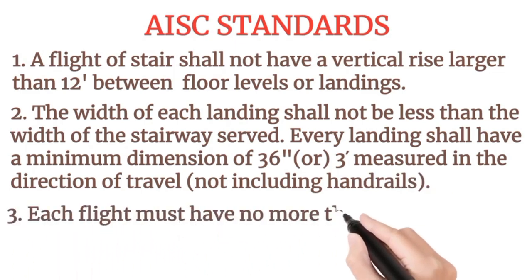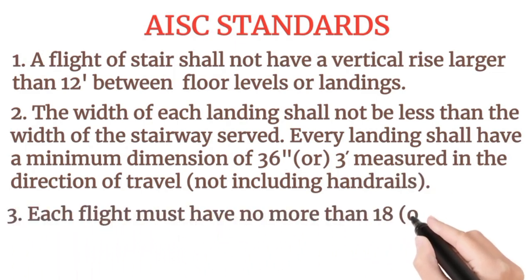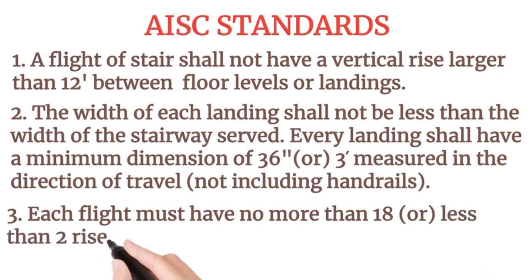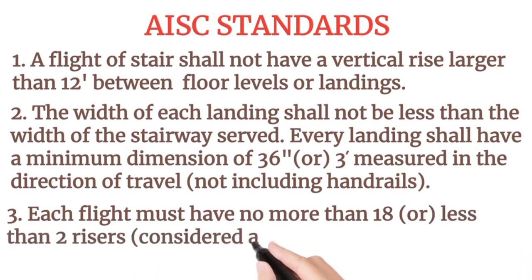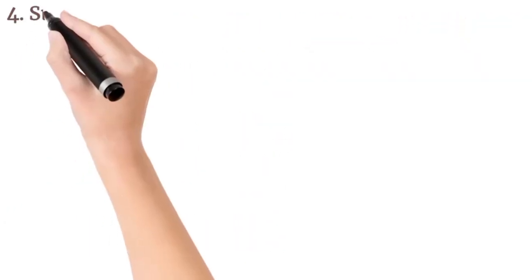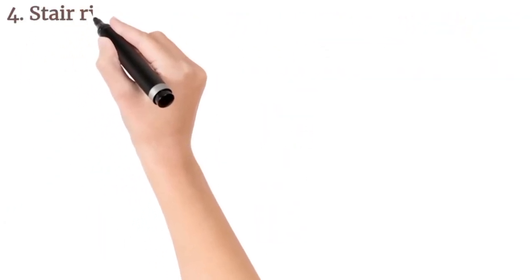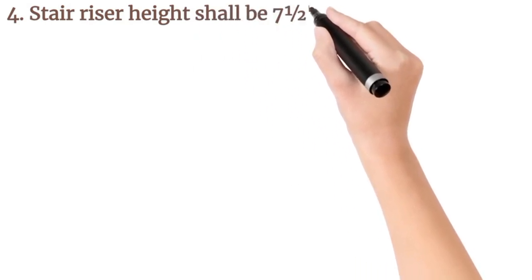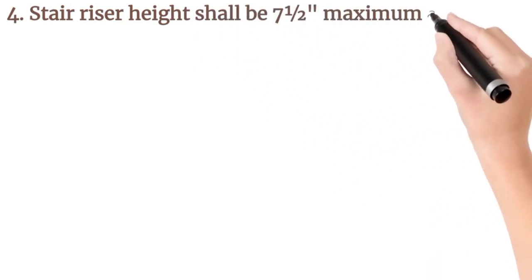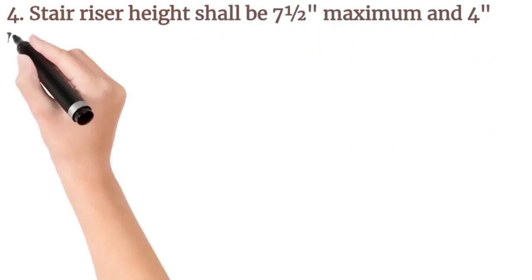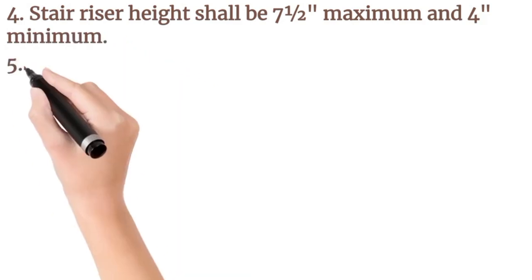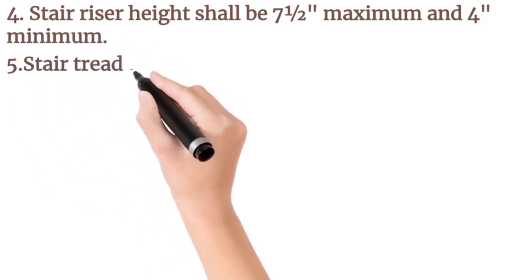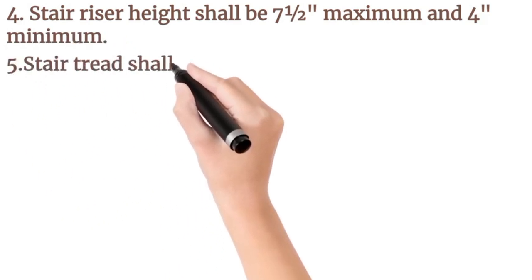3. Each flight must have no more than 18 or less than two risers, considered a stair. 4. Stair riser height shall be 7 and a half inches maximum and 4 inches minimum. 5. Stair tread shall be 10 inches to 11 inches minimum.